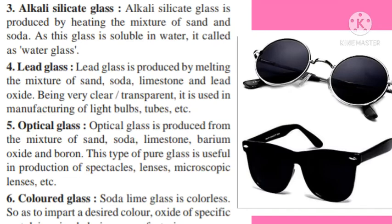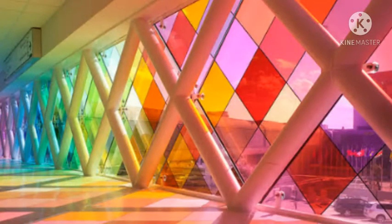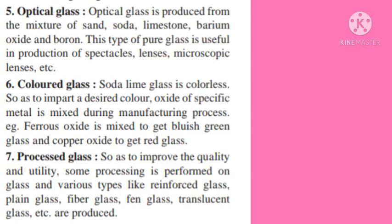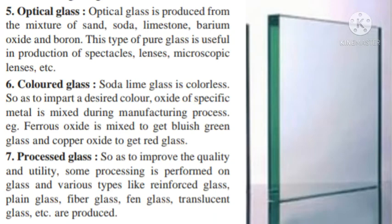Fifth: Optical Glass. Optical glass is produced from a mixture of sand, soda, limestone, barium oxide, and boron. This type of pure glass is useful in the production of spectacles, lenses, microscopic lenses, etc. Sixth: Colored Glass. Soda lime glass is colorless, so to impart a desired color, an oxide of a specific metal is mixed during the manufacturing process. For example, ferrous oxide is mixed to get bluish-green glass and copper oxide to get red glass. Seventh: Processed Glass. To improve the quality and utility, some processing is performed on glass to produce various types such as reinforced glass, plain glass, fiber glass, fan glass, translucent glass, etc.